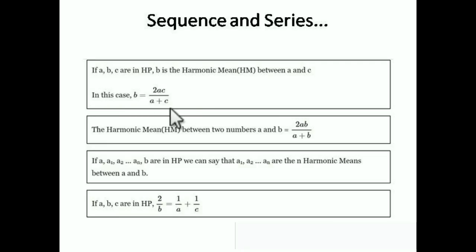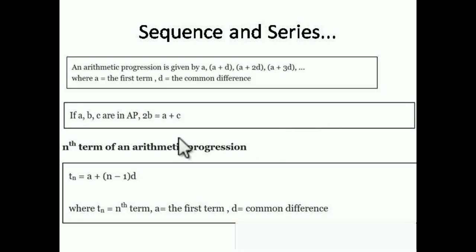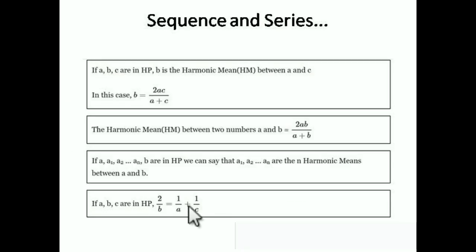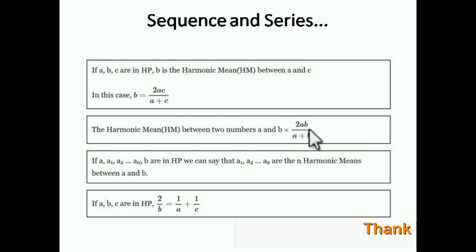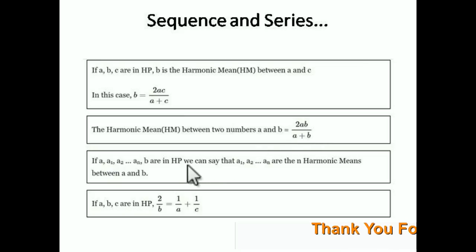The Harmonic Mean formula is: b = 2ac/(a + c). This is derived by taking the reciprocal of the AP condition 2b = a + c, giving 2/b = 1/a + 1/c, which simplifies to b = 2ac/(a + c). If you have two numbers a and b, then the Harmonic Mean is 2ab/(a + b).